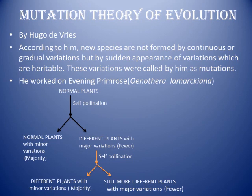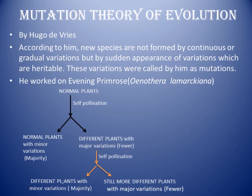What Darwin told in the previous theory was that new species are produced by continuous and very slow variations. Hugo de Vries told the opposite — whenever a new species is formed it is always by the sudden appearance of variations, a discontinuous process. Darwin also saw discontinuous variations but they were very few in number and he called them 'sports,' not mutations. Hugo de Vries called them mutations, and they appeared suddenly.